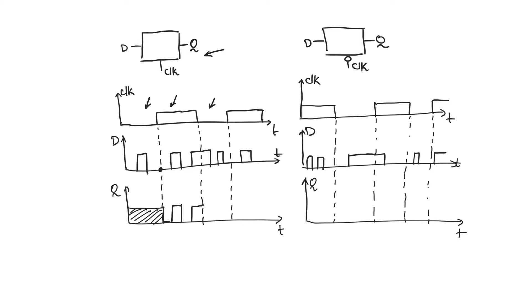Now the clock goes into the zero phase again. As soon as it goes into the zero phase, the latch goes into opaque mode or storage mode. Q and D are disconnected from each other, and Q keeps the last value of D that it saw in the active phase of the clock. Therefore Q will continue to be one throughout the zero phase of the clock. It really doesn't matter what happens to D during the zero phase because Q will remain at the last value it saw.